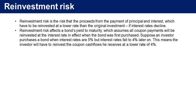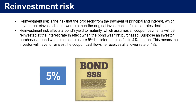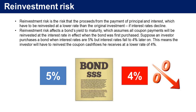Reinvestment risk is the risk that the interest rate at which these interim cash flows can be reinvested will decline. For example, suppose an investor purchases a bond when interest rates are at 5%, but interest rates fall to 4% later on. This means the investor will have to reinvest the coupon cash flows received at a lower rate of 4% in future, thus realizing a lower return on his reinvested sums.